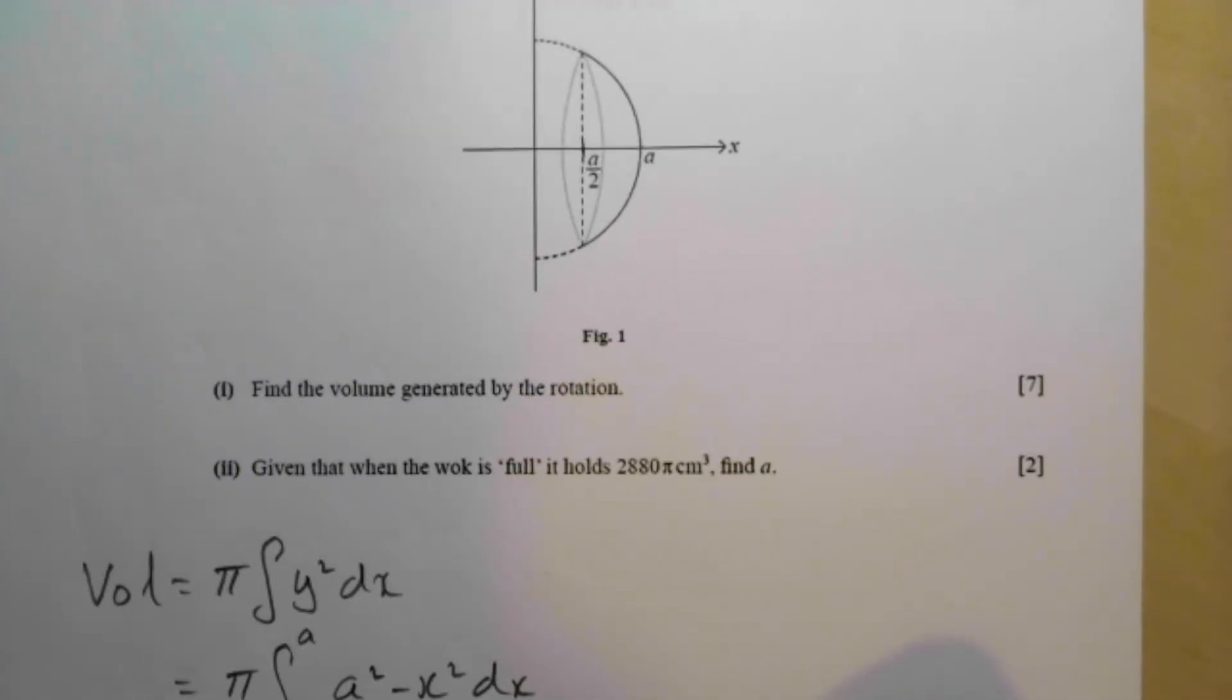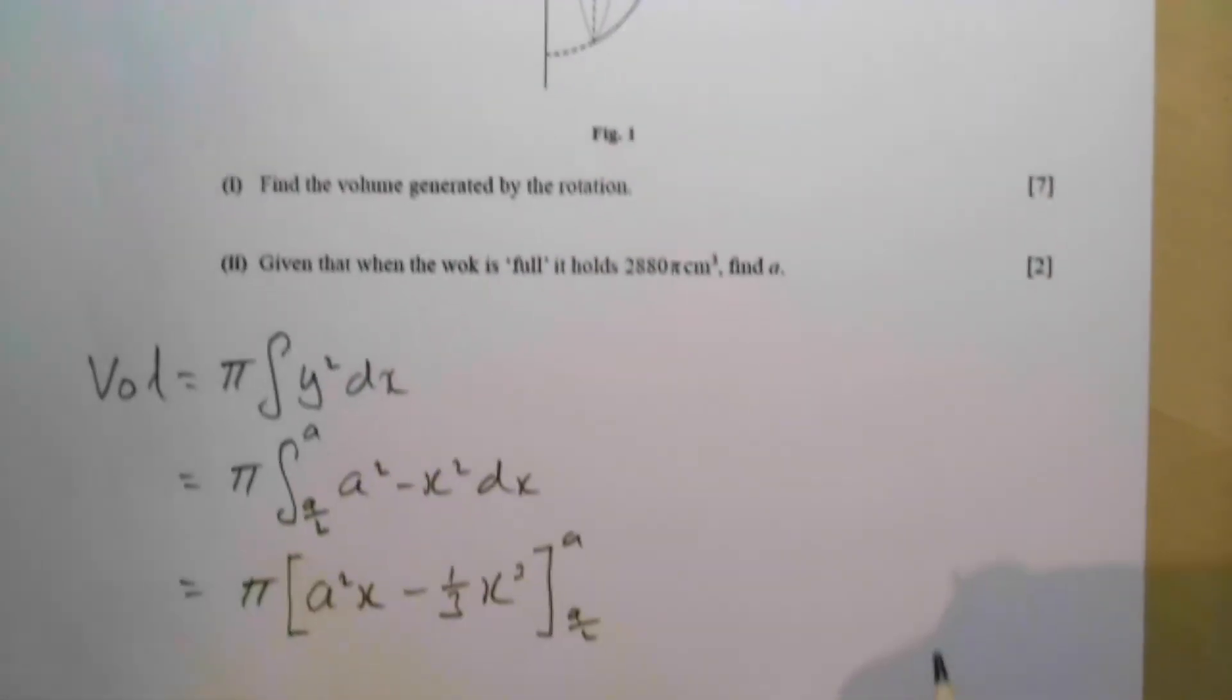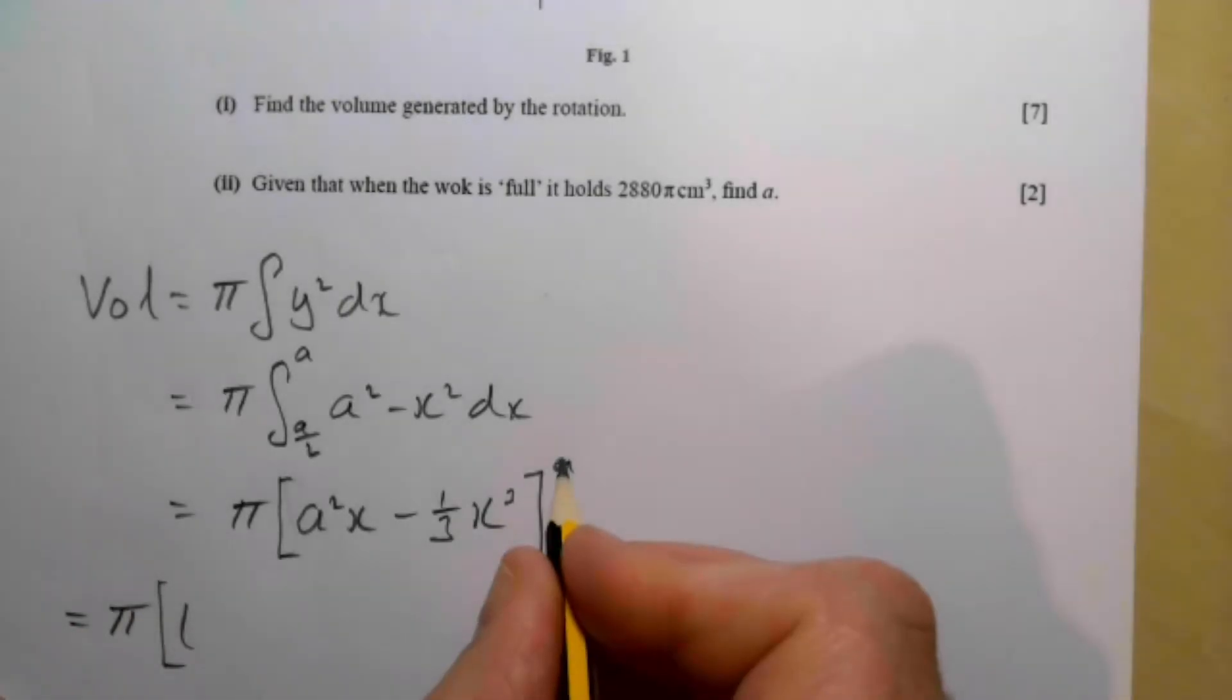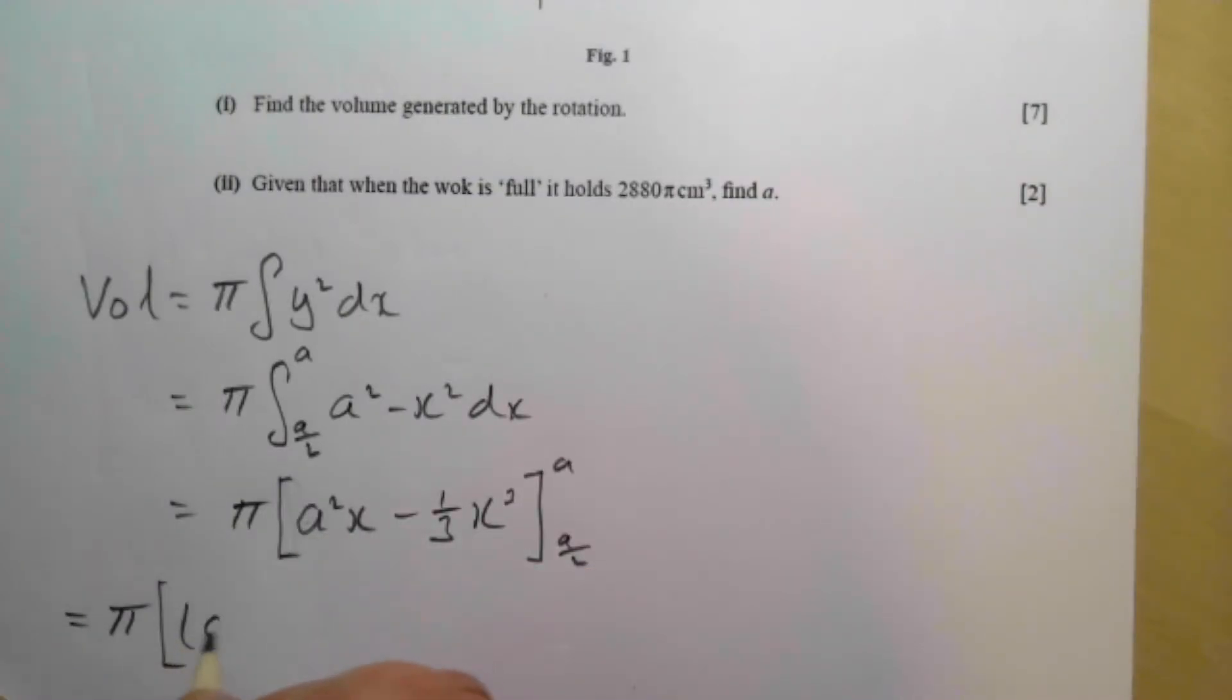All between a and a over 2. Sorry, you can't see that. Hopefully that makes sense. Substituting in a and substituting in a over 2. It's pi. Substituting in a, a squared times a gives me a cubed. Take away a third a cubed. And then take away a over 2. So that gives me a cubed over 2.